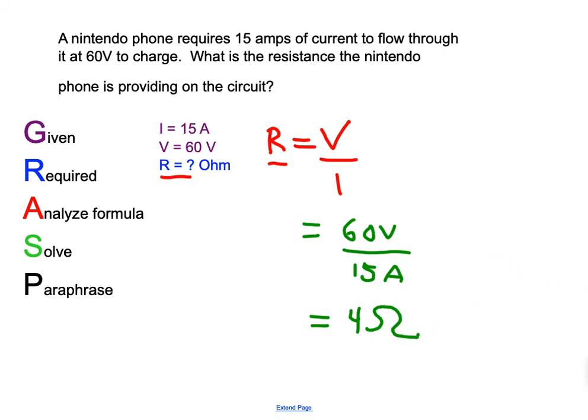Alrighty guys. So takeaway from this paraphrase, it requires, the Nintendo phone resists this circuit with four Ohms, whatever. And that's a simple example of resistance. And now all you have to do is totally practice because of course, practice, perfect practice makes perfect. And this is perfect practice.